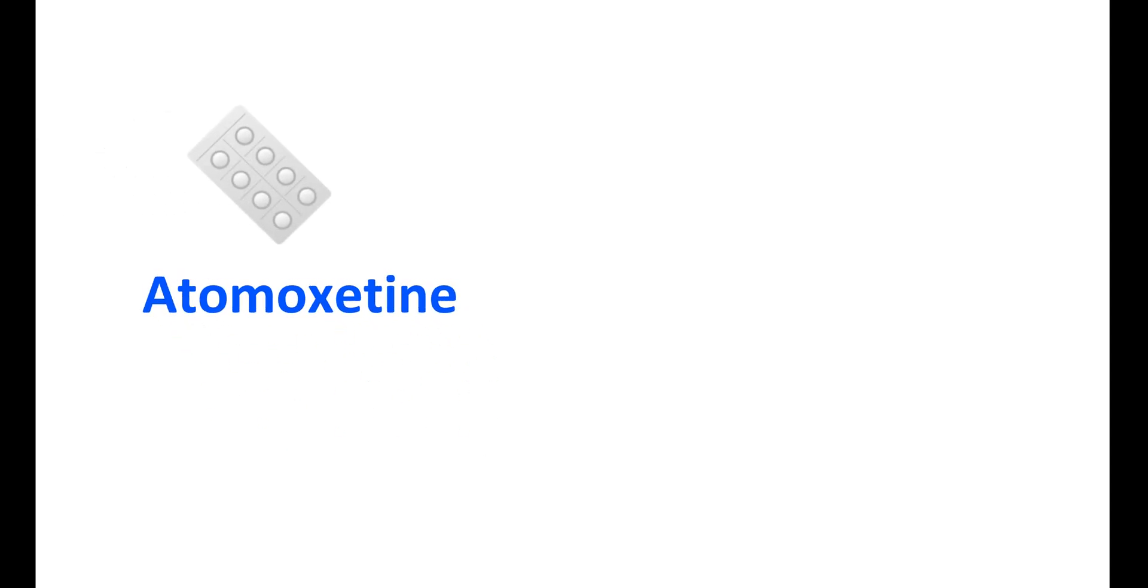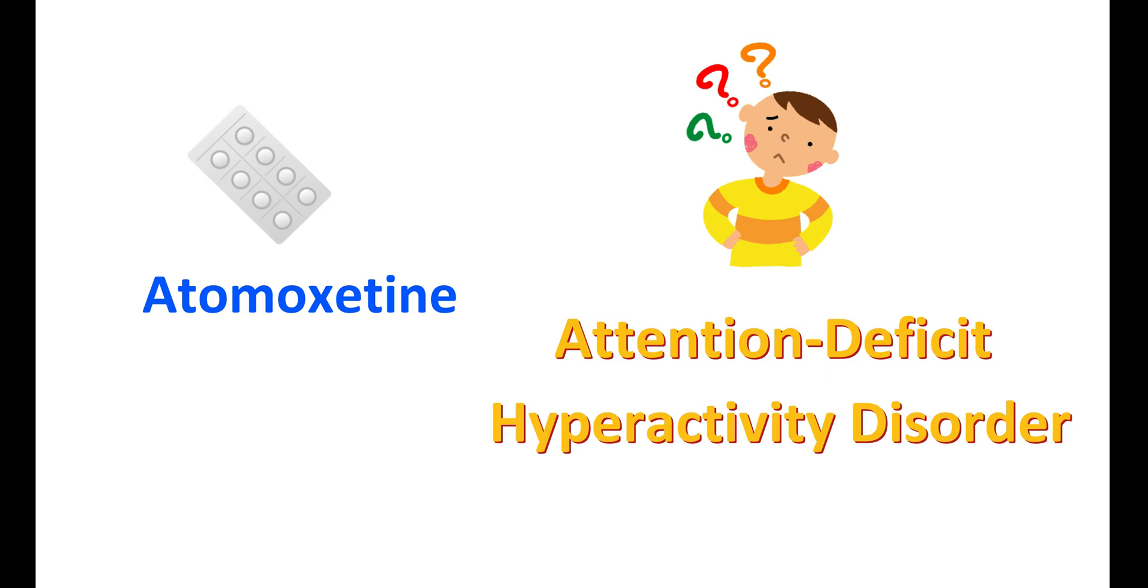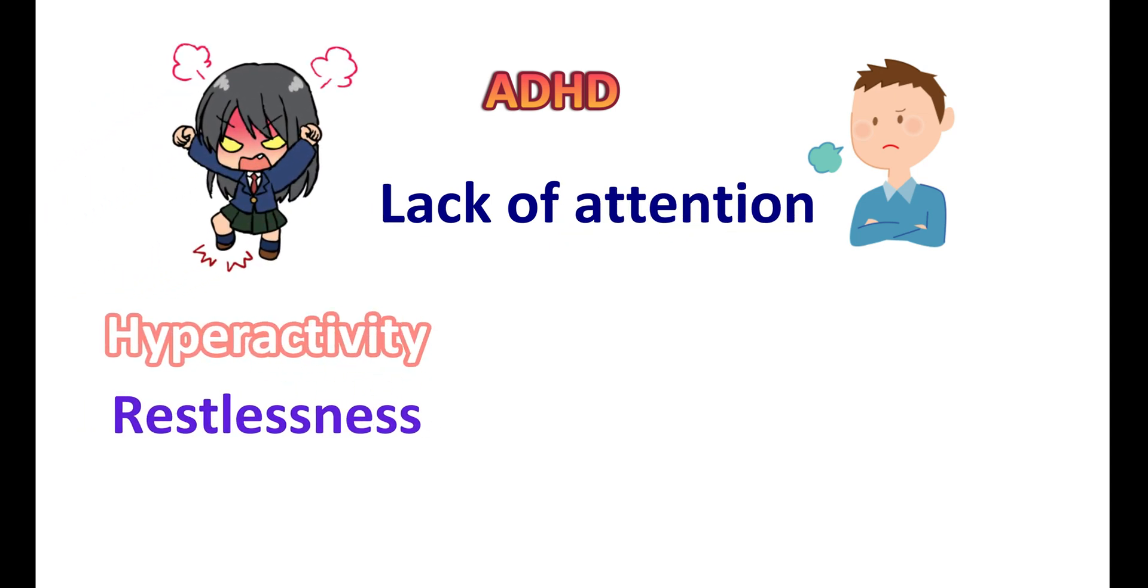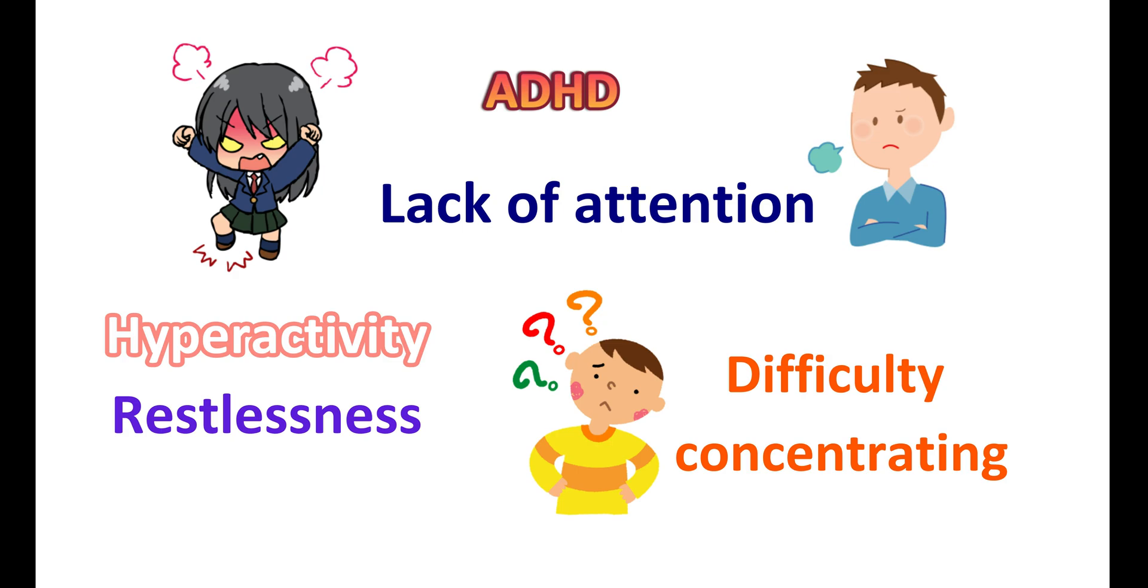Atomoxetine is one of the medications that is indicated for the treatment of attention deficit hyperactivity disorder, commonly known as ADHD. ADHD is commonly observed in children, teenagers, and adults and it may be associated with lack of attention, hyperactivity, increased restlessness, and difficulty concentrating. Such people are easily distracted due to lack of attention. Atomoxetine can be given to treat this condition.